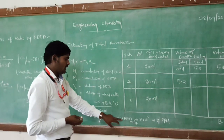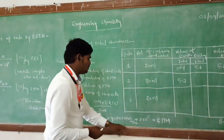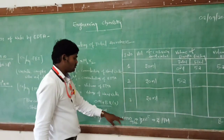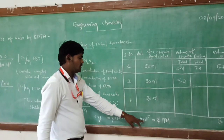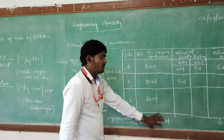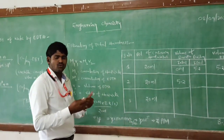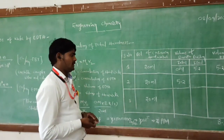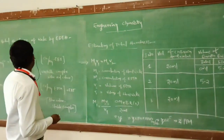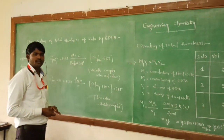This y value, multiplied by the molecular weight of calcium carbonate into 1000 mg per litre, and then multiplied by 10 to the power of 5, gives the hardness value in ppm. This is the estimation of the hardness of water by EDTA method. Thank you.